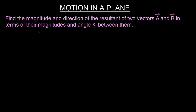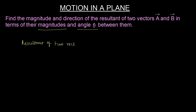Let's first understand what we are trying to do here. We are trying to find out the magnitude and direction of the resultant of two vectors A and B in terms of their magnitudes and the angle theta between them. To find out the resultant of two vectors, we have utilized a method called the graphical method.